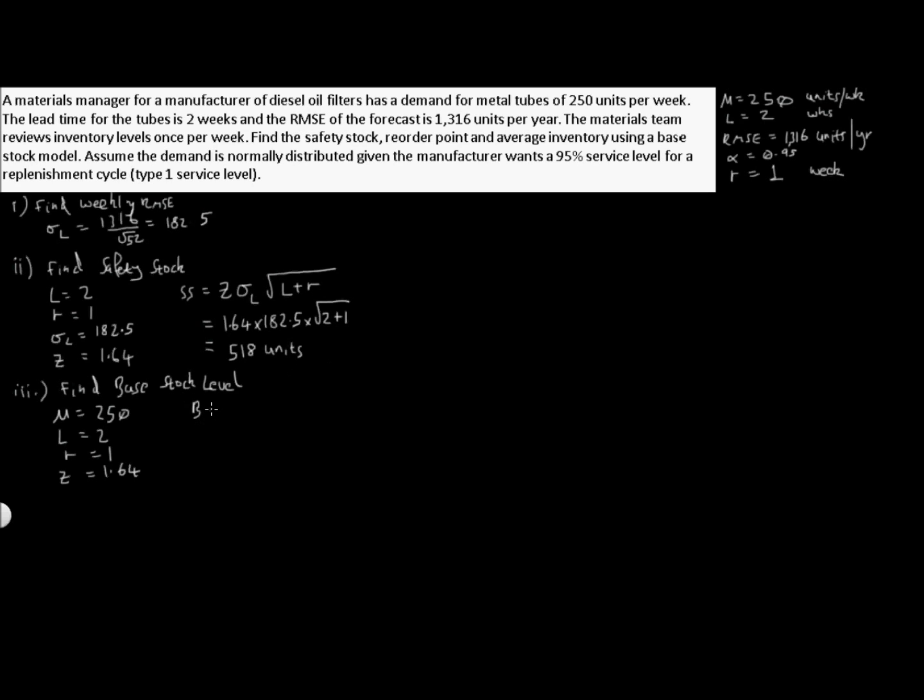Our base stock level we're going to call B. And remember the theory: it's mu times L plus R plus safety stock, which for a base stock model is Z sigma L square root of L plus R. And plugging our values in, we get 250 times 2 plus 1 plus our safety stock we've already calculated, which is 518 units. So doing the maths all the way through we get 1268 units.